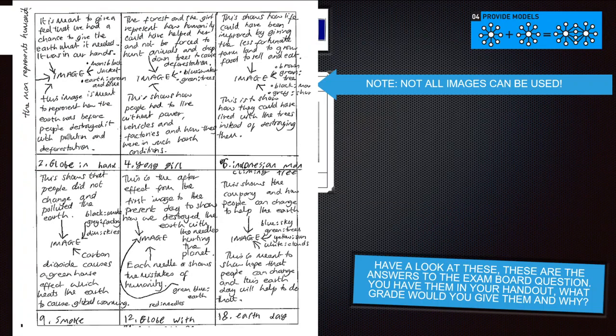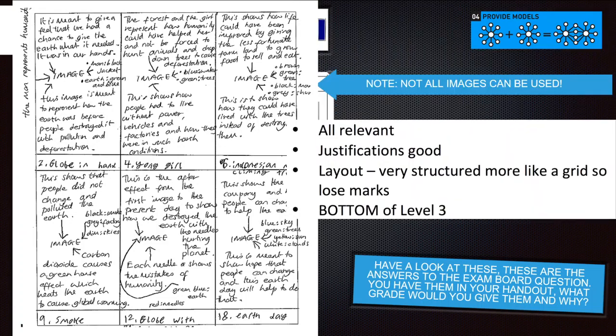Here's another one. What do you think — level one, level two, or level three? This one would be the bottom of level three. All the images are relevant and the justifications are good, but the layout is very structured — it's more like a grid, so it loses marks. In some ways it does look a bit like a storyboard rather than a mood board, but the content is there.